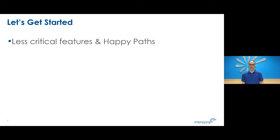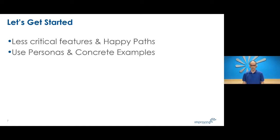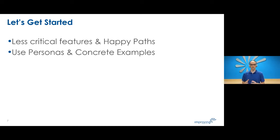To get started, consider what are the less critical features and happy paths you can tackle first. Starting with less critical features takes some pressure off getting things exactly right. Coming up with happy paths helps get things started quickly. It's also important to use personas and concrete examples. Using personas gives everyone involved a better understanding of who the users are — there's a wealth of documentation on personas and I strongly encourage you to look them up.